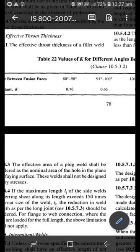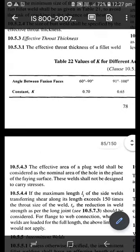See, value of k for different angle between the fusion phases. Here the angle between the fusion phase is 90 degrees if you done the lap joint and all. The angle between the fusion phase will be definitely 90 degrees. All the fillet weld, the angle must be between 60 to 90. In special case only the angle will be varied.